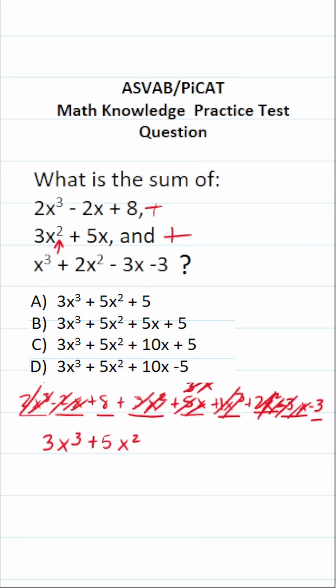And then finally, we have 8 - 3. 8 - 3 is positive 5. So when we add these three polynomials together, we get 3x³ + 5x² + 5, which you can see is answer choice A.